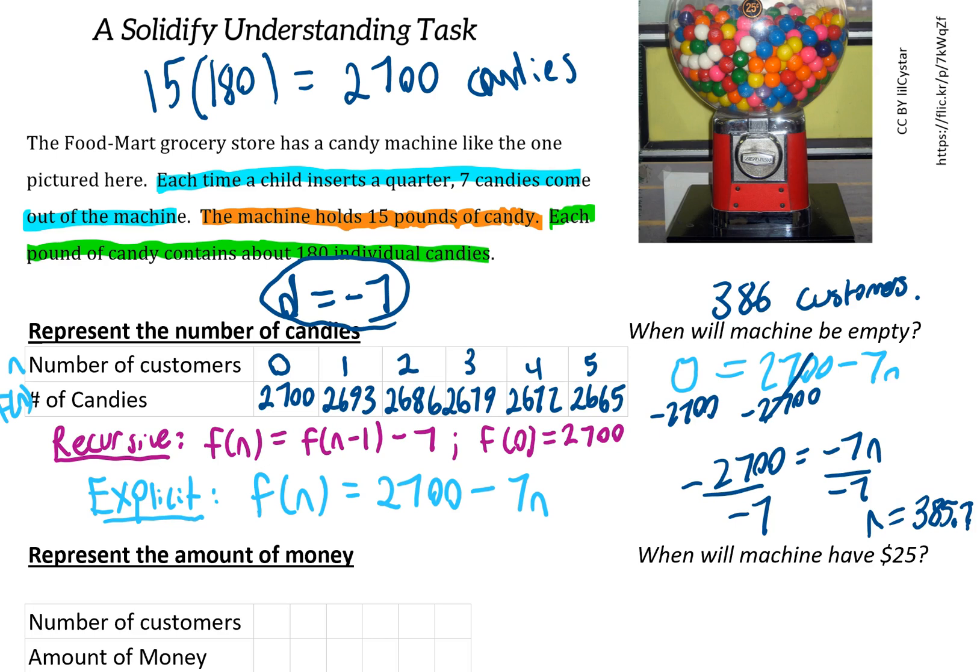The next scenario asks us to represent the amount of money. This is simpler. If every customer spends a quarter, or 25 cents, we start with zero dollars. The first customer brings us to 25 cents, the second to 50 cents, the third to 75 cents, the fourth to one dollar. After eight customers we'll have $2, after 12 we'd have $3, and so on.